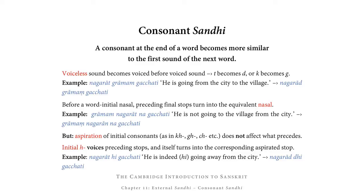Let's focus on the consonant part. A consonant at the end of a word becomes more similar to the first sound of the next word. Becoming more similar means adopting one or several of the features of that sound at the beginning of the next word, and such features include voice, aspiration, nasalization, and so on. So for example, a voiceless sound becomes voiced before another voiced sound: T changes into D, K becomes G, and so on.